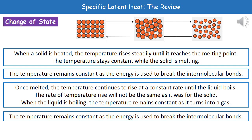When we heat a solid, the temperature rises steadily until it reaches the melting point. Once we reach that melting point, the temperature remains constant while the solid is actually undergoing the process of melting. The reason behind that is that all of the energy we're putting into it is being used to break intermolecular bonds, rather than increasing the temperature.